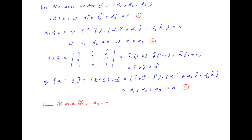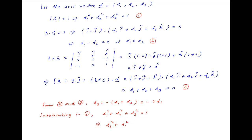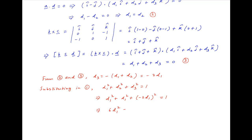Result 3 implies d3 = −(d1 + d2). Replacing d2 with d1 from result 2, we get d3 = −2d1. Substituting into condition 1: d1² + d1² + (−2d1)² = 1, giving 6d1² = 1, so d1 = ±1/√6.